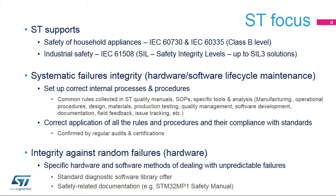ST, in compliance with these standards, cares about both systematic and random failures. Systematic failures are predictable, and their avoidance and monitoring are based on practical experience gained in the industry. Systematic failures can be avoided mainly by applying correct internal processes throughout a product's lifecycle. These requirements are defined in specific internal quality documentation, and regular inspections and audits ensure that these internal rules are applied and comply with the recognized standards. To ensure integrity against random failures, specific software methods and hardware design techniques must be applied as described in the following slides.